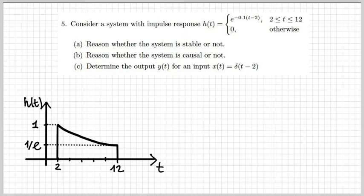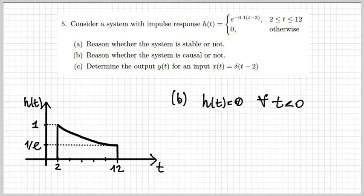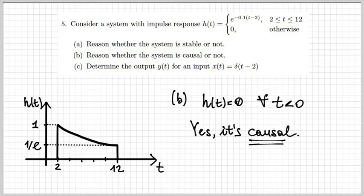What about causality? To determine whether the system is causal or not, we need to see whether h(t) is zero for all negative times. And this is the case, because if you look at the representation, we see that h(t) is non-zero only between 2 and 12. So yes, we can conclude that the system is causal.